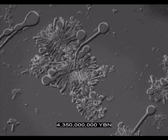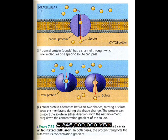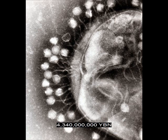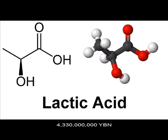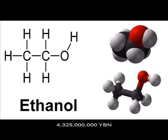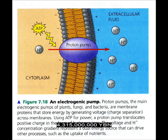Cells make the first lipids on Earth: fats, oils, waxes. Facilitated diffusion evolves — proteins in the cell membrane allow only certain molecules to enter the cell. The first virus evolves; these cells depend on the DNA duplicating and protein production systems of other cells to copy themselves. Cellular respiration begins: glycolysis evolves in the cytoplasm, and cells can make ATP from glucose. ATP is the molecule that drives most cellular work. Fermentation evolves — cells can make lactic acid. Fermentation of ethanol evolves.